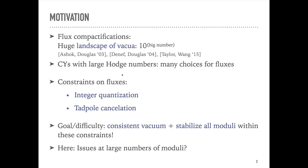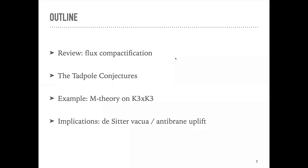One should keep in mind that these fluxes are not unconstrained: they have to be integer quantized and they have to satisfy a so-called tadpole cancellation condition. These two conditions together are pretty strong and actually make this a meaningful result, because if the fluxes were unconstrained I could have arbitrarily many vacua. When we talk about flux compactification, the goal or the difficulty is to obtain a consistent vacuum and to stabilize all moduli — to give masses to all moduli — within these two constraints.